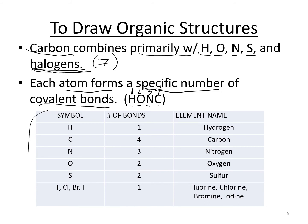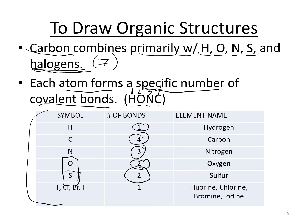To summarize the bonding rules: hydrogen = 1 bond, oxygen = 2, nitrogen = 3, carbon = 4. Sulfur is below oxygen on the periodic table, so it also forms 2 bonds. Halogens form 1 covalent bond with other elements. You can always use the periodic table as a guide to help remember the bonding rules.